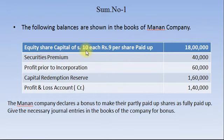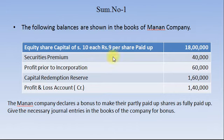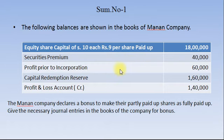Here we are given information of Manan Company. Equity Share Capital of Rs. 10 each, Rs. 9 per share paid up, and total paid up value is Rs. 18,00,000. So the number of shares issued by the company would be Rs. 18,00,000 divided by Rs. 9 per share, which gives us 2,00,000 equity shares. As reserves and surplus, we have Securities Premium, Profit Prior to Incorporation, Capital Redemption Reserve, and Profit and Loss Account.